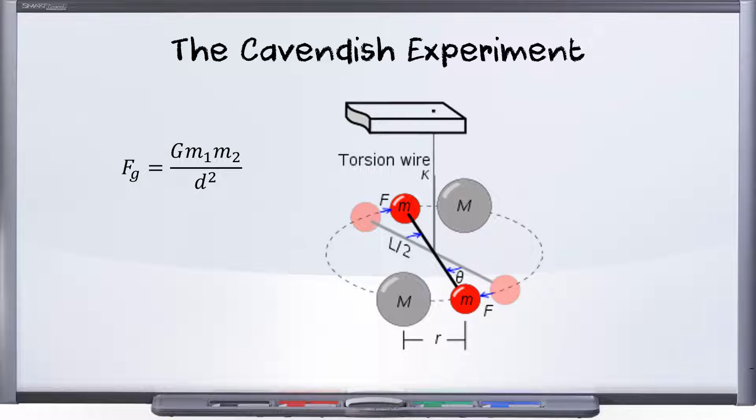The beam is allowed to settle, and then another pair of masses is introduced. If the masses attract each other, it could be enough to make the torsion rod twist slightly.